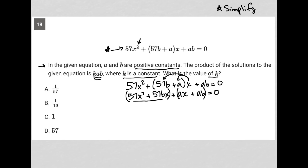So the GCF in that first binomial would be 57X. What's left over in parentheses would be X plus B. Bring my plus sign down. The GCF in the second binomial would just be A, so I'll pull that out.